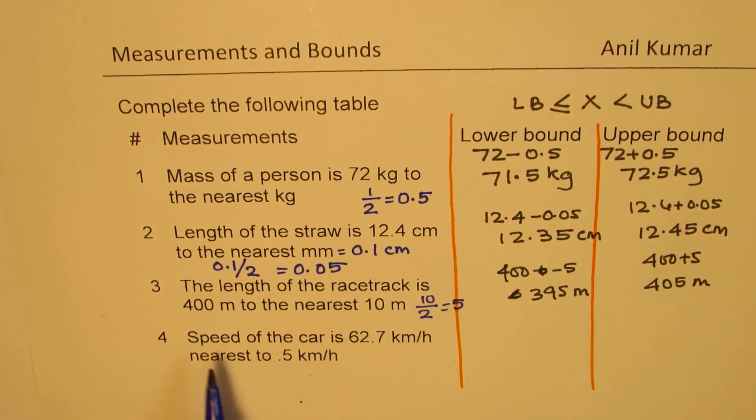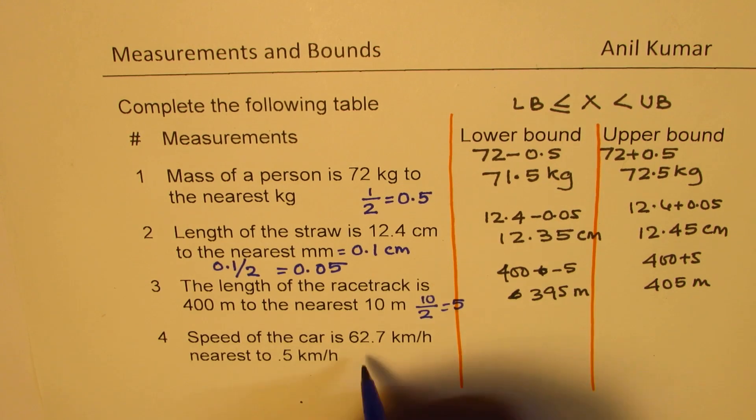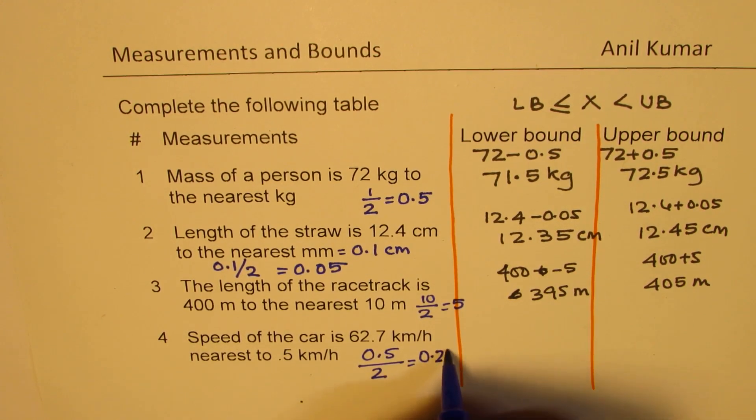Here we have speed of the car at 62.7 kilometers per hour to the nearest 0.5 kilometers per hour. So what should you add and subtract? Well, we'll divide 0.5 by 2. So when you do that, we get 0.25, correct?